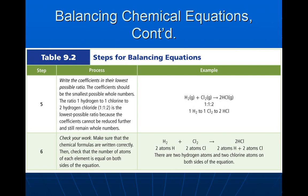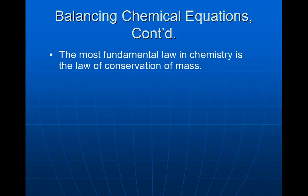Finally, I'm going to check my work. I'm going to make sure that the chemical formulas are written correctly, then check that the number of atoms of each element is equal on both sides of the equation. I look again: 2 atoms of H and 2 atoms of Cl on the reactant side yield 2 atoms of H plus 2 atoms of Cl on the product side — I'm balanced. The most fundamental law in chemistry is the law of conservation of mass: I check to make sure I have the same thing going in, the same thing coming out.